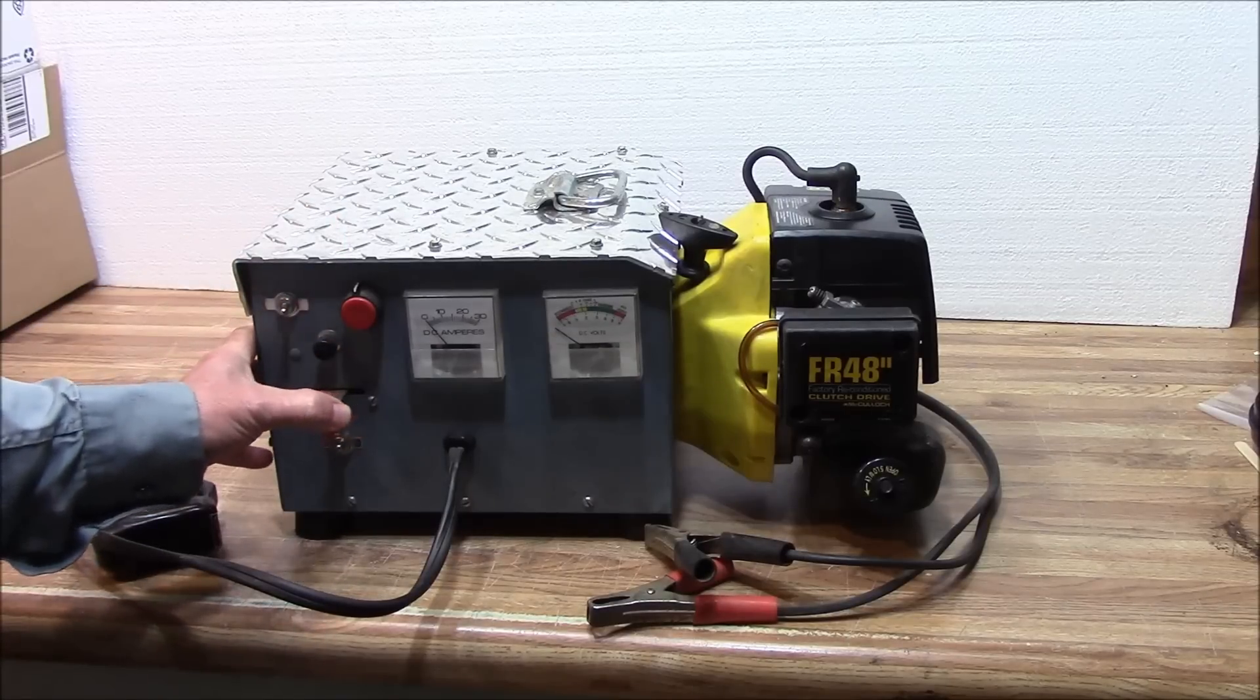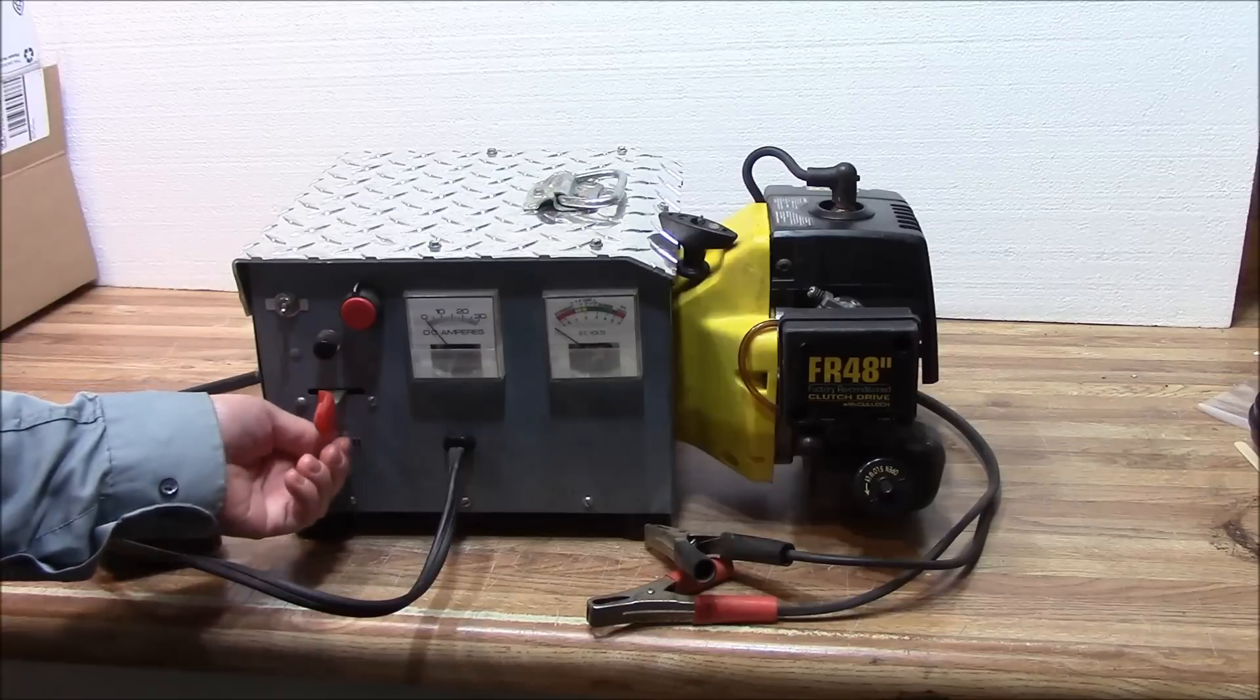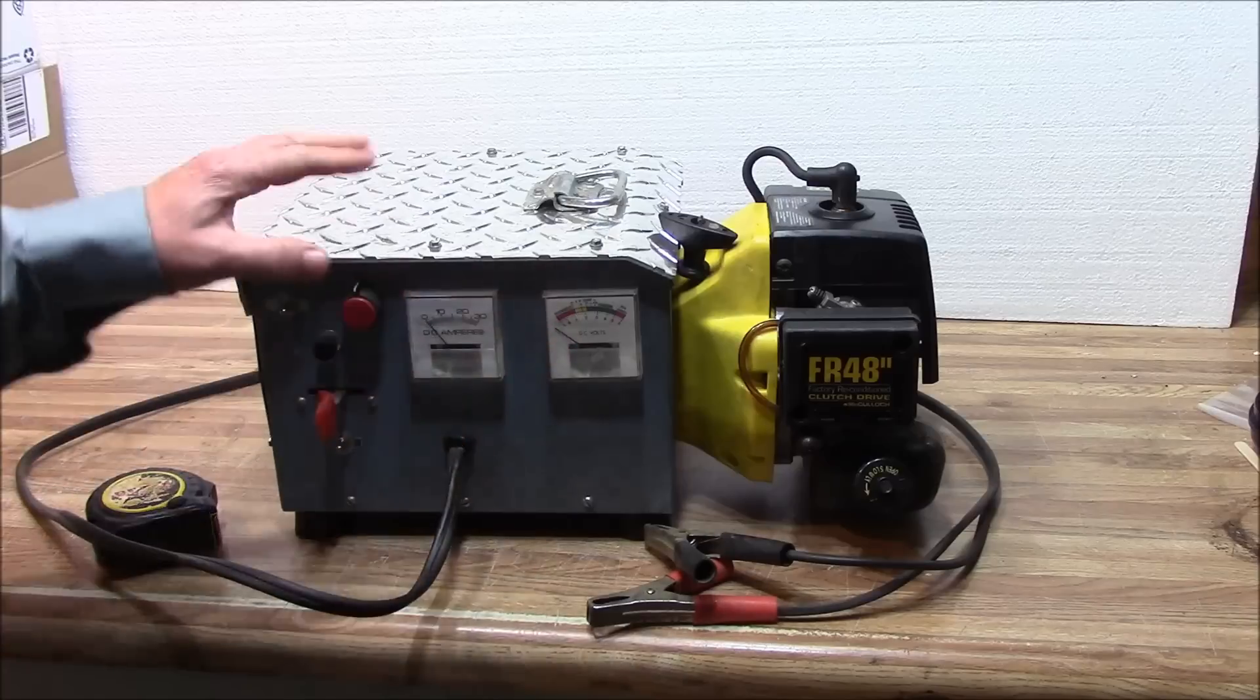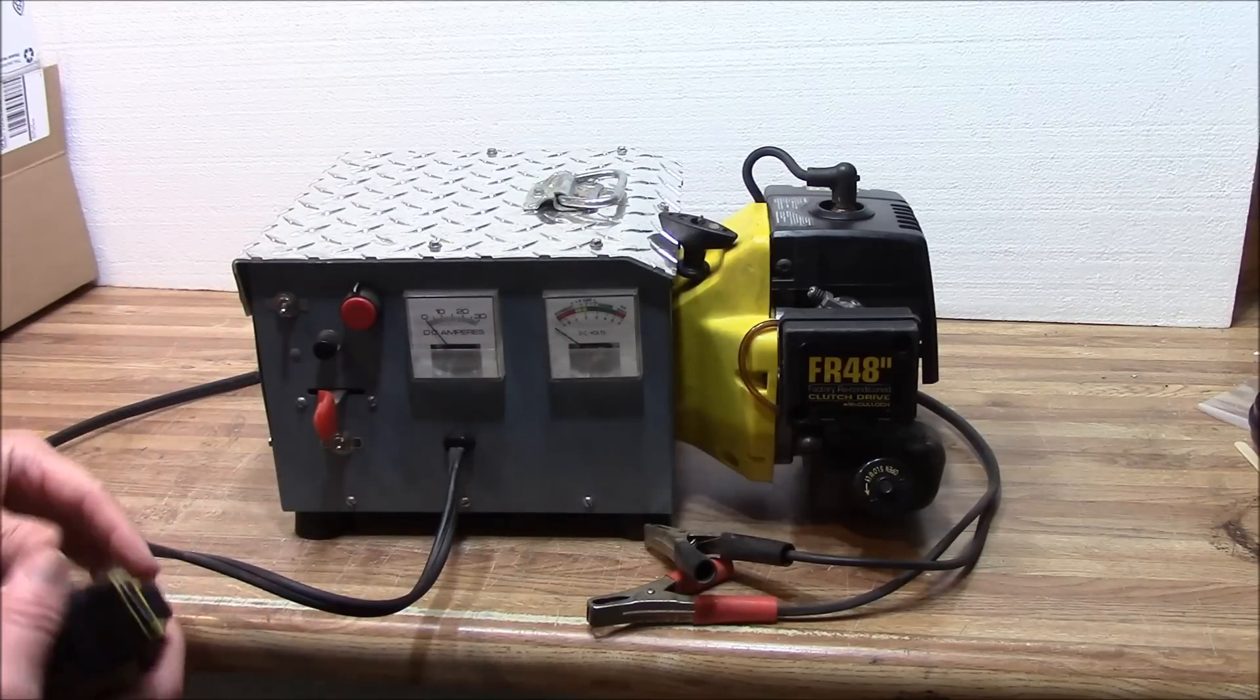This is your throttle for running the motor up. This is your basic on and off. I've got an amp meter, then I've got a volt meter on this thing. Let me give you some dimensions and show you what I did.